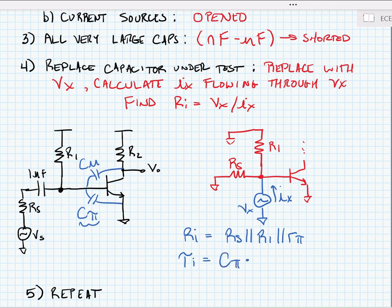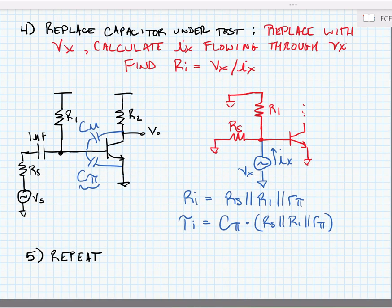Now the next step would be to repeat finding the time constant for all of the little capacitors in the circuit, all of the C sub I's. In this case, we would have to repeat just for C mu.